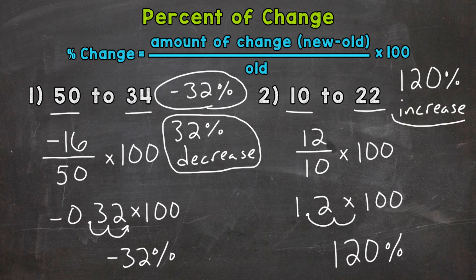Now remember, we can always tell if we have an increase or decrease based on positive and negative. A positive represents an increase. A negative represents a decrease. And we can always double check with the problem.